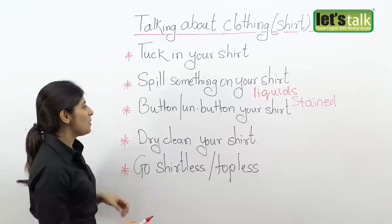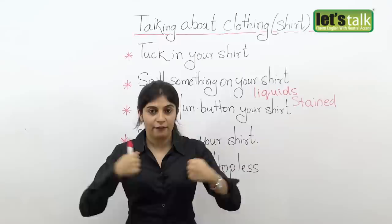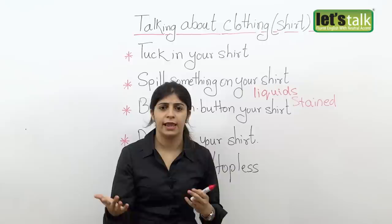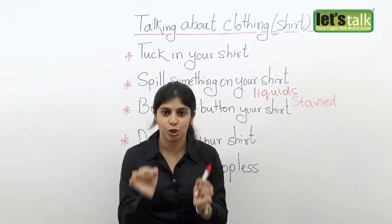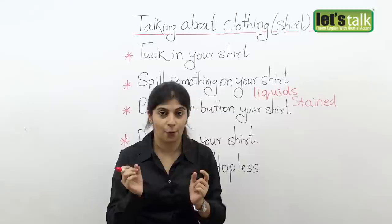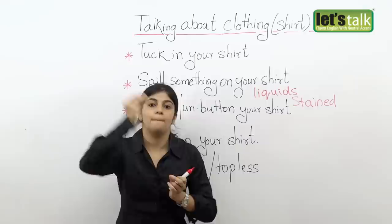'Button your shirt' means you are putting on the buttons when wearing a shirt. The correct phrase is I am buttoning up my shirt. If one of your buttons is open, the right way to say it is 'button up your shirt.' The other one is 'unbutton your shirt' — you are opening your buttons. People sometimes say 'I'm removing my buttons,' but that's incorrect English, as it implies physically removing a button. The right phrase is 'unbuttoning your shirt.'